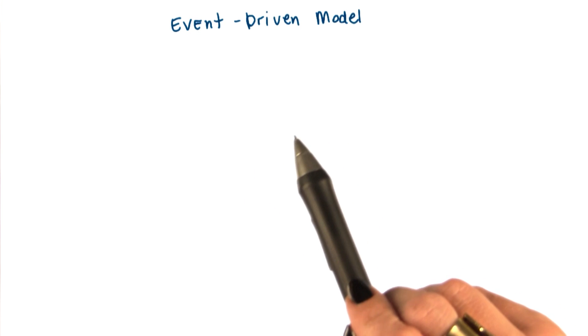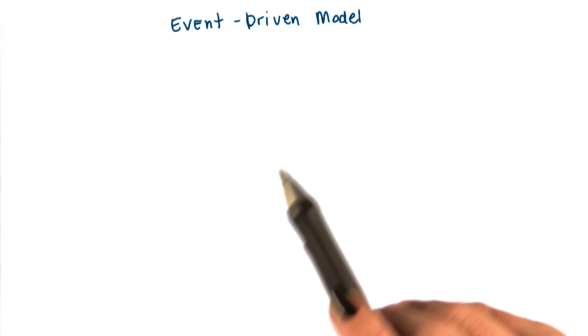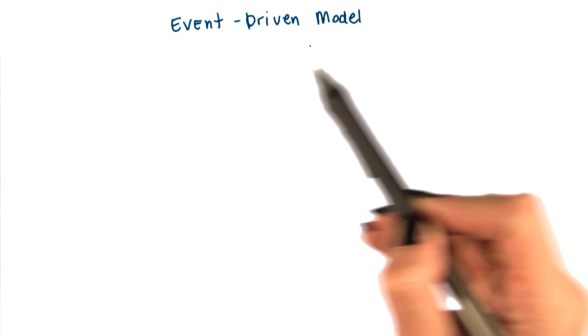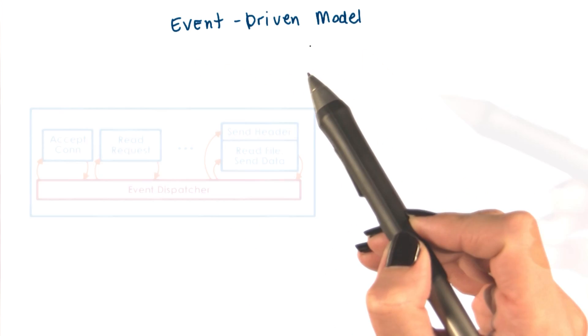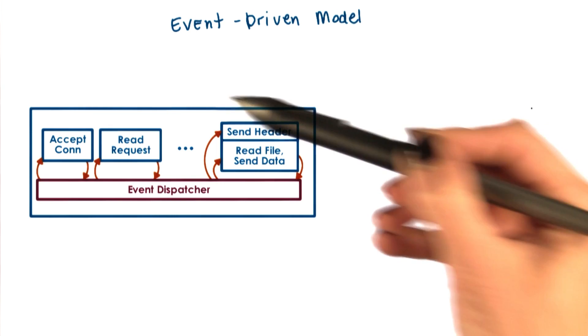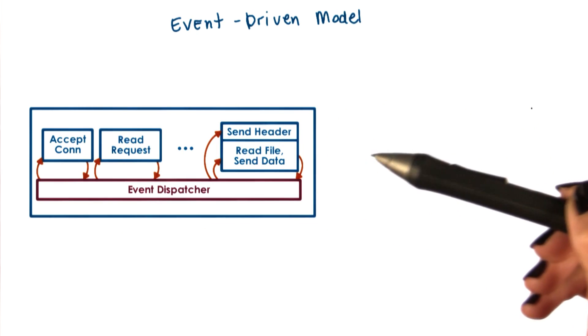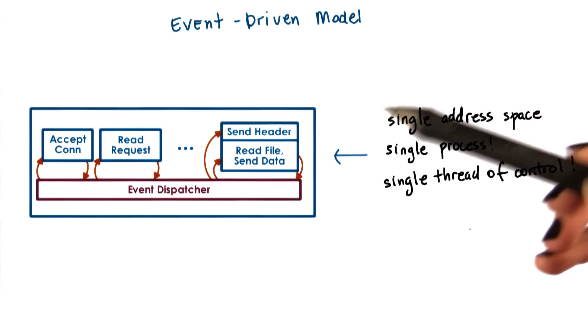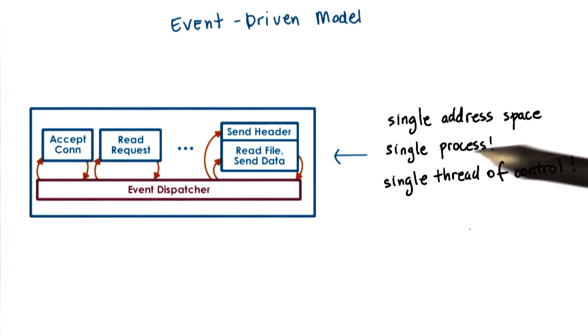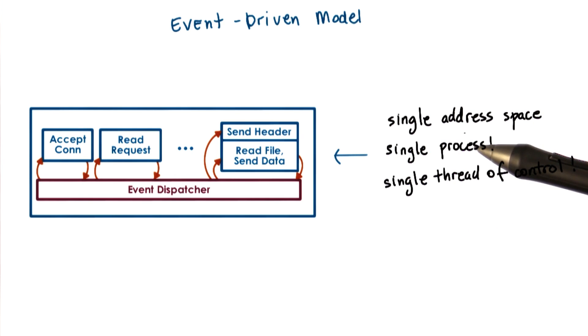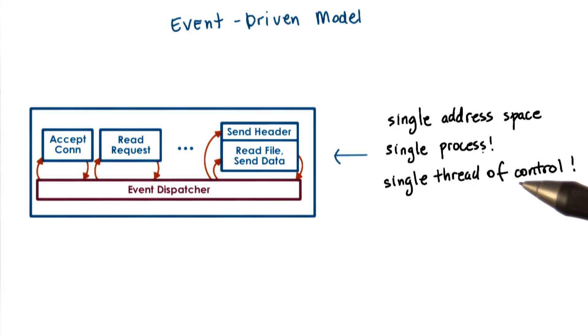Now let's talk about an alternative model for structuring server applications that perform concurrent processing. The model we'll talk about is called the event-driven model. An event-driven application can be characterized as follows: the application is implemented in a single address space, with basically only a single process and a single thread of control.